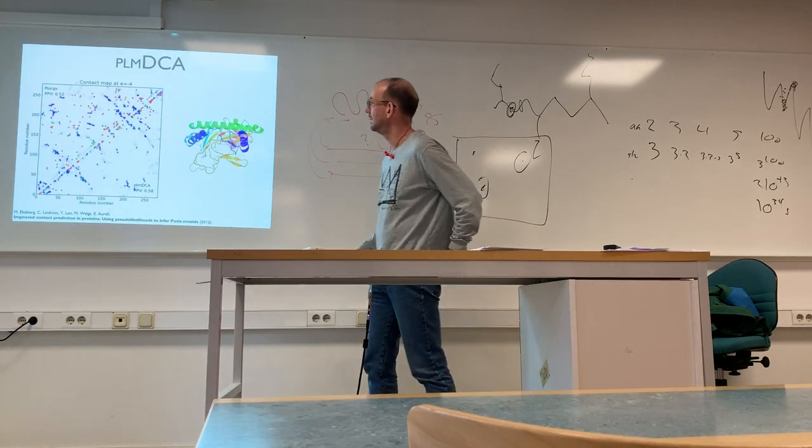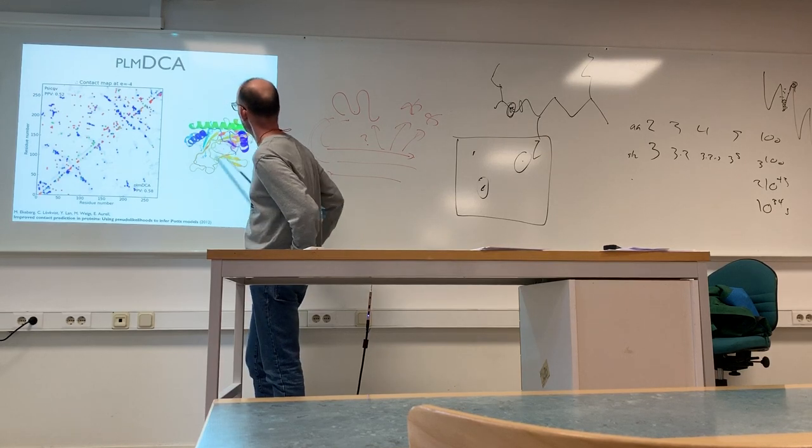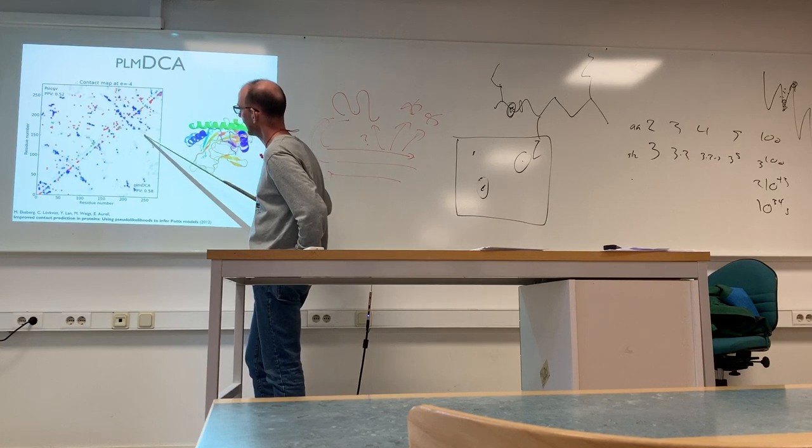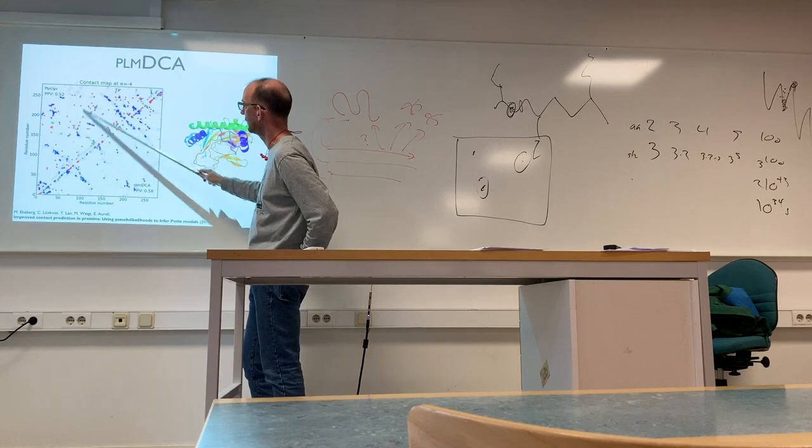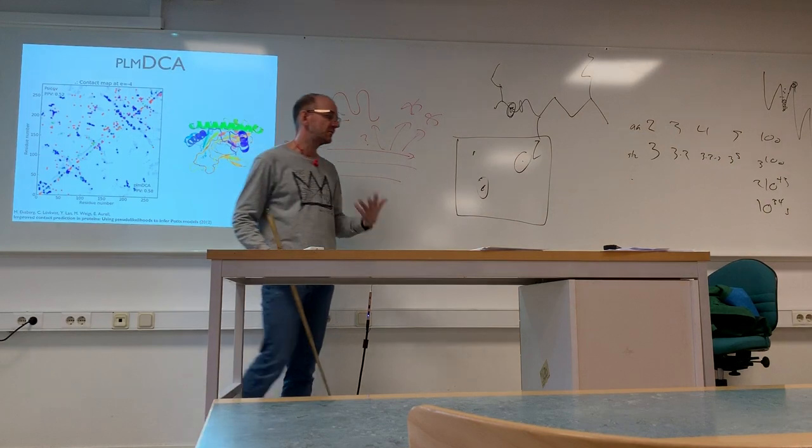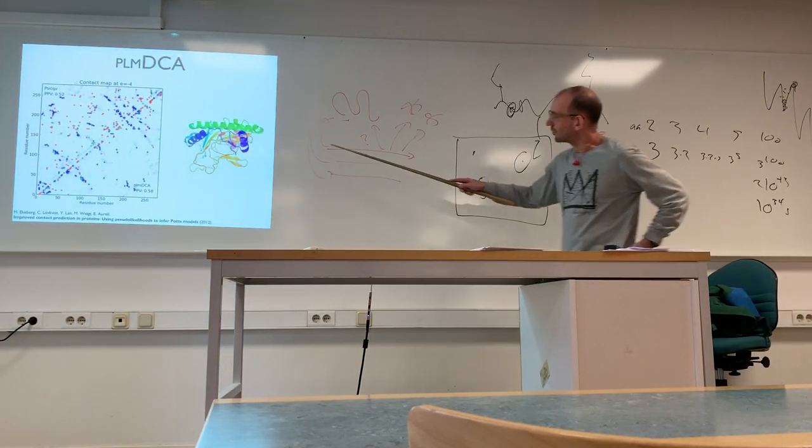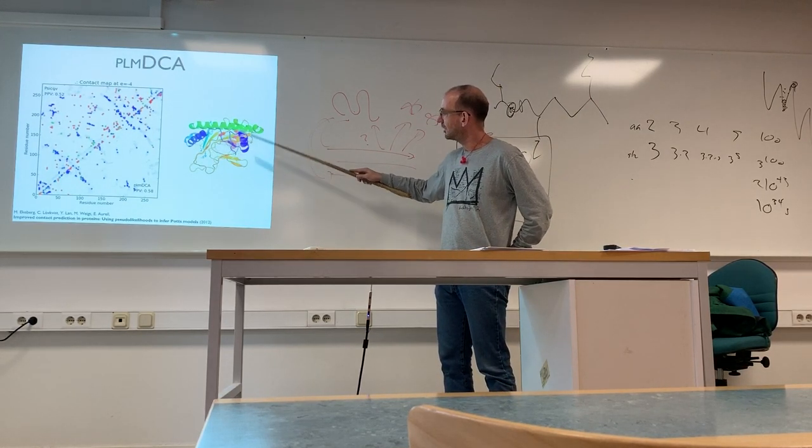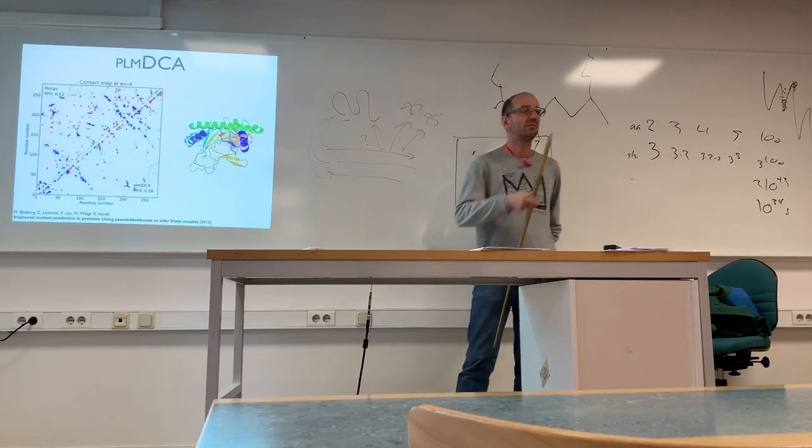Then if you jump up to methods like PSICOV or PLMDCA with the same contact map, you see that you have lots of patterns following the secondary structure elements that are correct. There are some things wrong, but you can start seeing the interaction patterns of this protein. If you look here, you don't have a contact in this area, but you have lots of contacts in other areas.